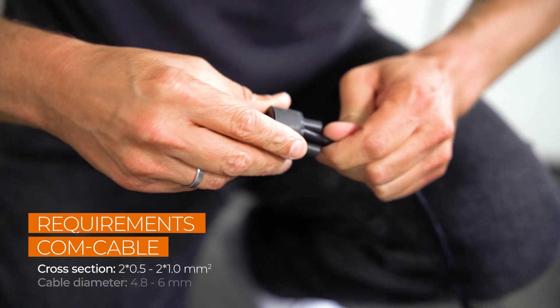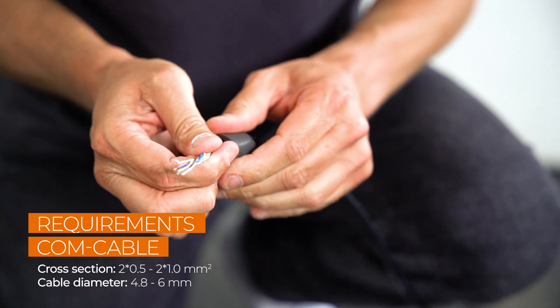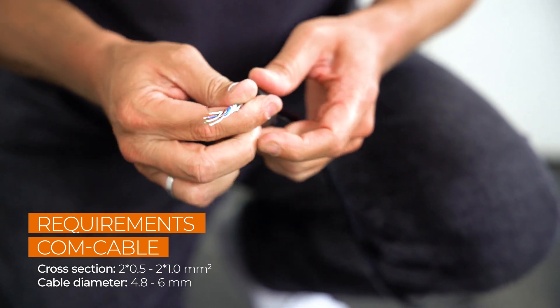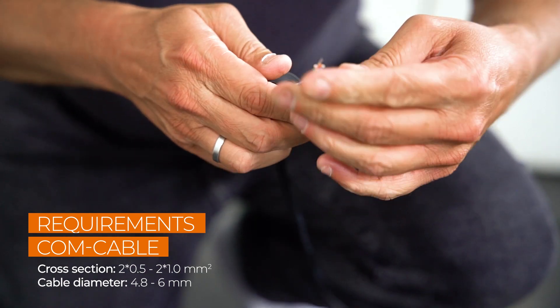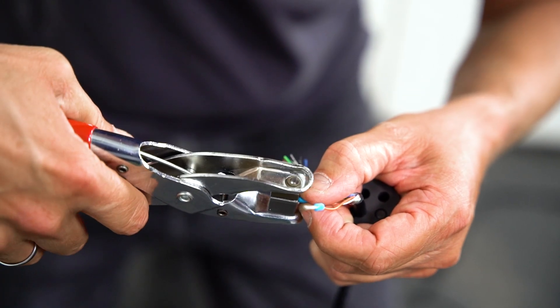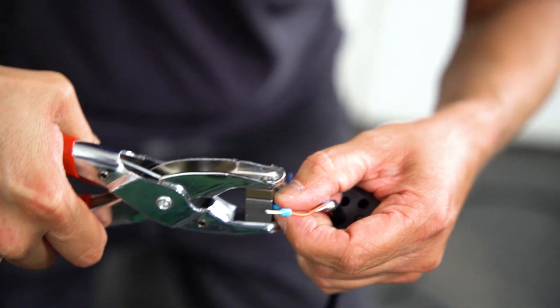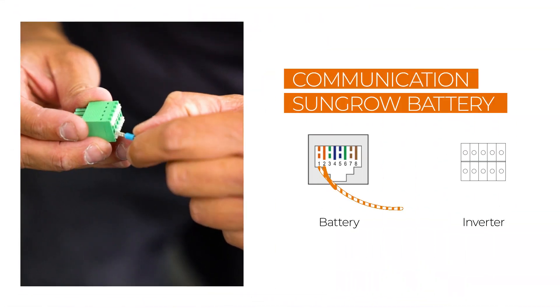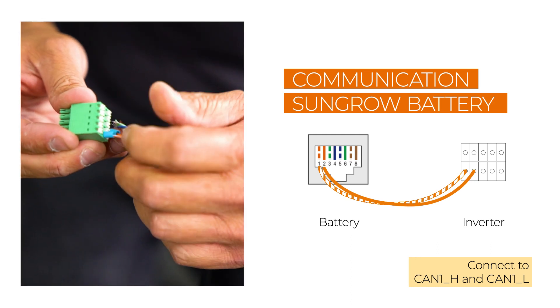Remove approximately 4 to 5 cm of the cable sheath of the communication cables. Then strip approximately 5 to 7 mm of the inner cables. Fit the cables with end sleeves before you push them into the plug. The SunGrow battery is connected to the CAN interface.